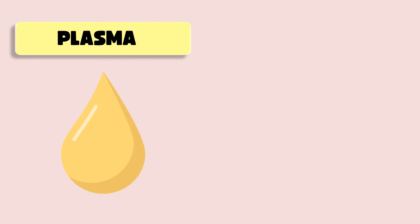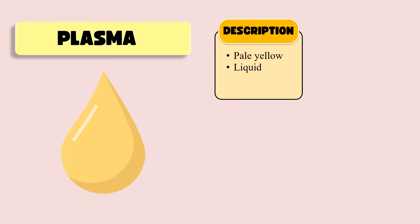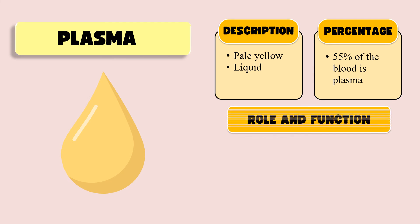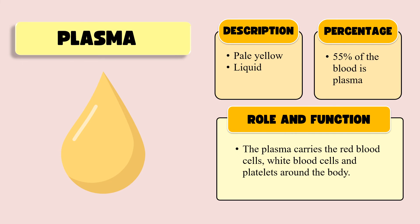The next part of the blood is plasma. Plasma is a pale yellow colored liquid present in the blood and it forms approximately 55 percent of the blood. The plasma carries all of the components like RBCs, WBCs, and platelets — all of these components are present in the plasma. Beside this, plasma also contains certain hormones, glucose, enzymes, and waste products.